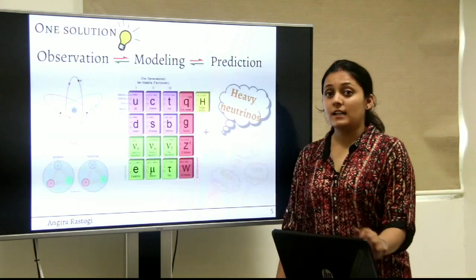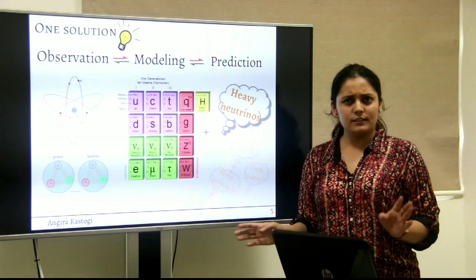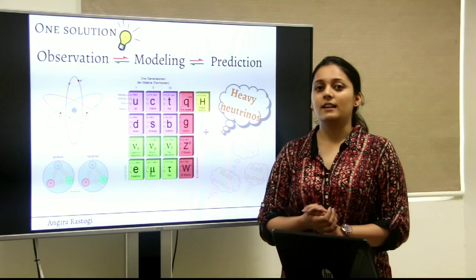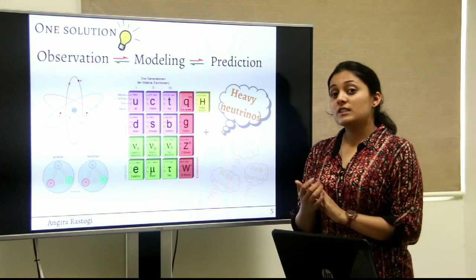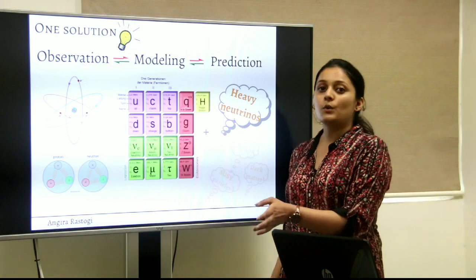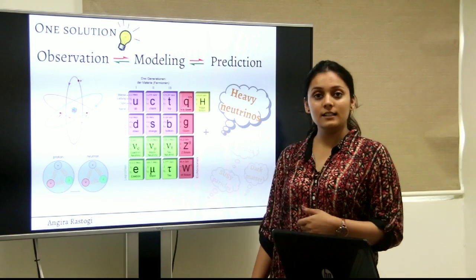So we believe that there are some other particles called heavy neutrinos that exist somewhere in nature which can explain the smallness of the standard model neutrinos. How exactly? Let's see.